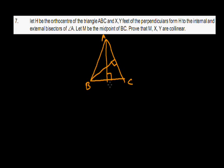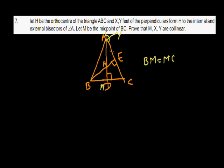Let the given triangle be triangle ABC. AD is the perpendicular from vertex A to the opposite side BC, and BE is the perpendicular from vertex B to opposite side AC. The intersection point of these perpendiculars is H. Let M be the midpoint of BC, so BM = MC. The internal and external bisectors of angle A are also noted.